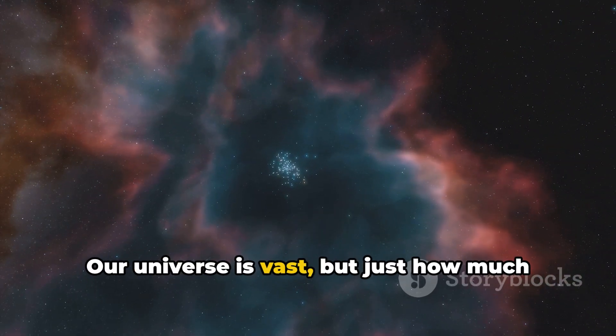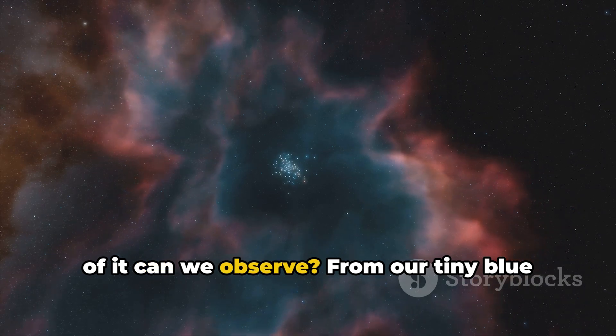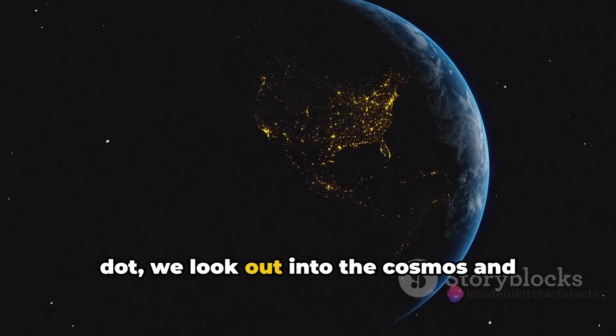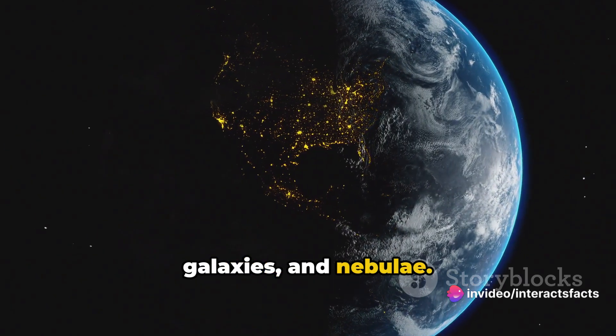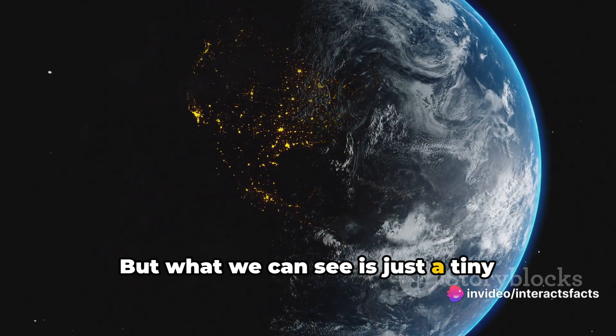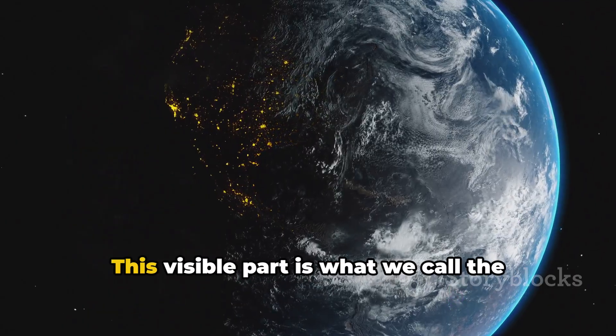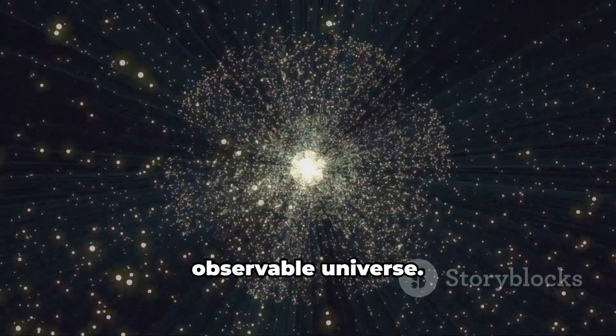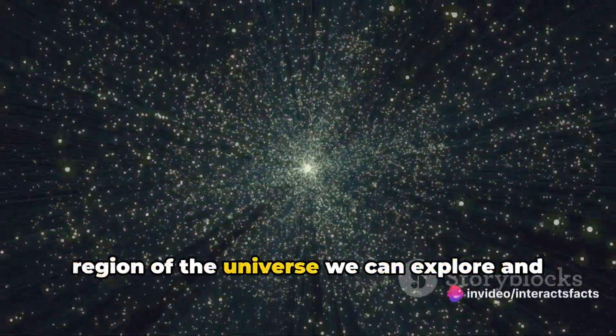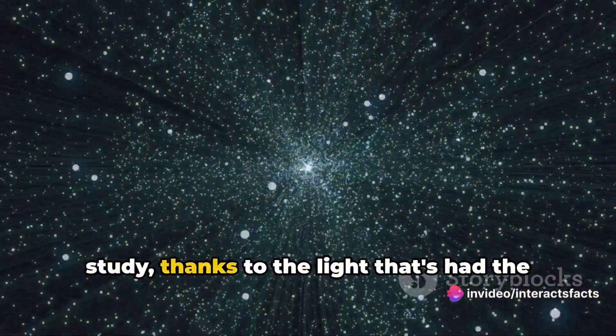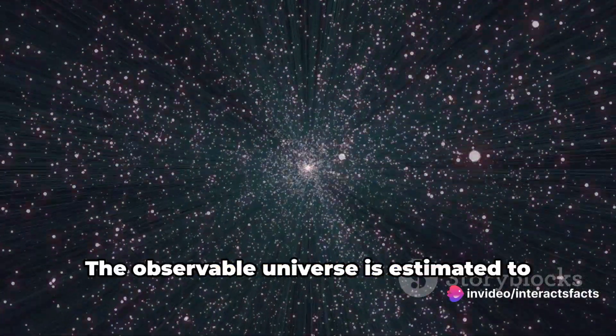Our universe is vast, but just how much of it can we observe? From our tiny blue dot, we look out into the cosmos and marvel at the splendor of the stars, galaxies and nebulae. But what we can see is just a tiny fraction of the universe. This visible part is what we call the observable universe. It's like our cosmic neighborhood, a region of the universe we can explore and study thanks to the light that's had the time to reach us.